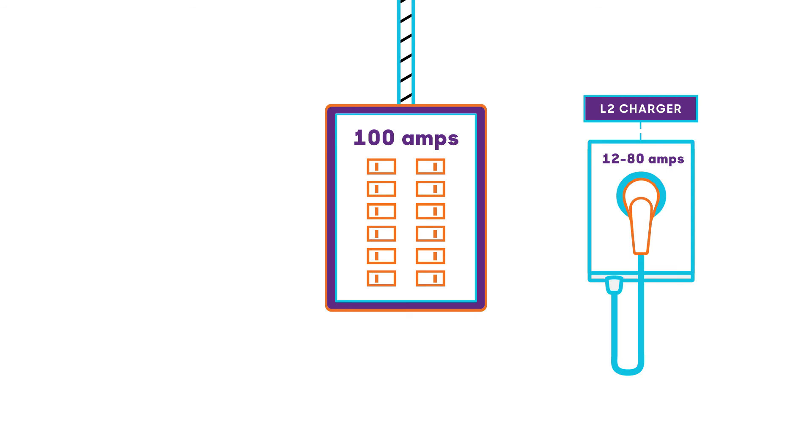And just so you don't get confused, the circuit breaker rating is always higher than the charger rating. A 32 amp charger needs a 40 amp breaker, for example.